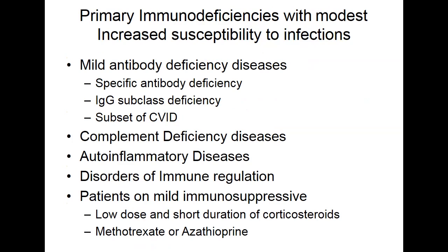Mild immunodeficiency diseases include specific antibody deficiency, IgG subclass deficiency, and a subset of mild CVID patients. Complement deficiencies are another component of innate immunity — not severely susceptible to infection, though in certain cases they are. Auto-inflammatory diseases are a newer category that are neither immunodeficient nor autoimmune, and there you don't have much problem with infections. Disorders of immune regulation produce a lot of autoimmunity but not as much infection. Very mild immunosuppression also falls in this category.